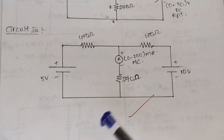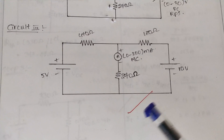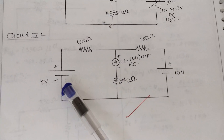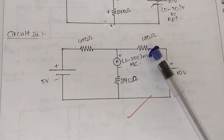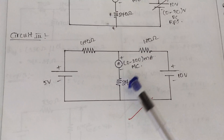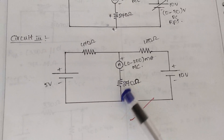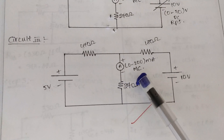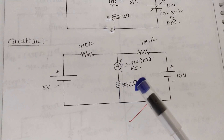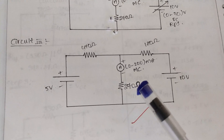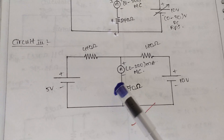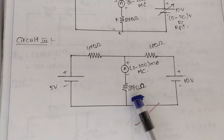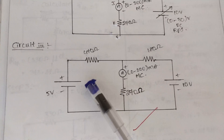The practical verification of the superposition theorem will be explained in this video. Two sources, 10 volts and 5 volts, are connected to a circuit with three resistances: 470 ohms, 180 ohms, and 270 ohms. The current through the 270 ohms resistance is the algebraic sum of the currents produced by each source acting alone.